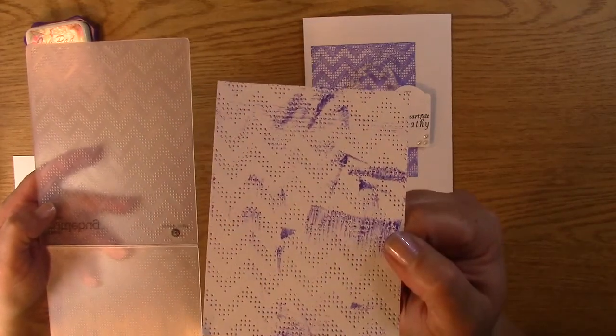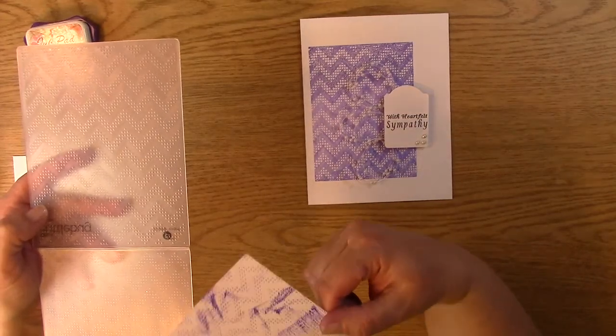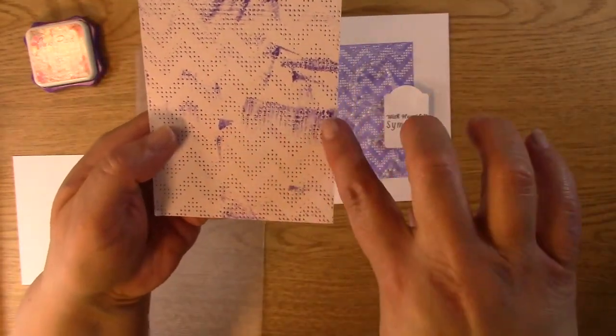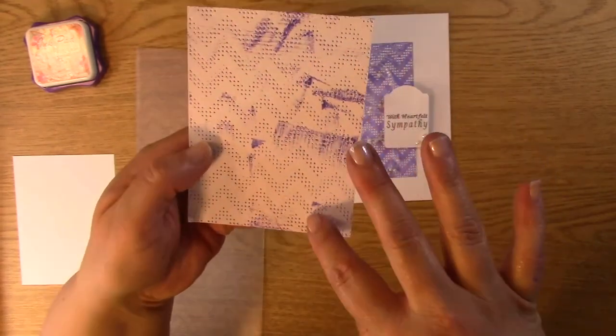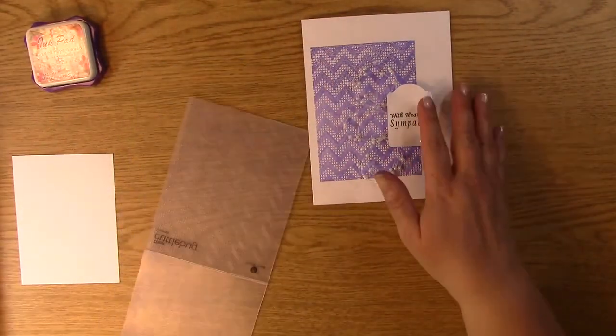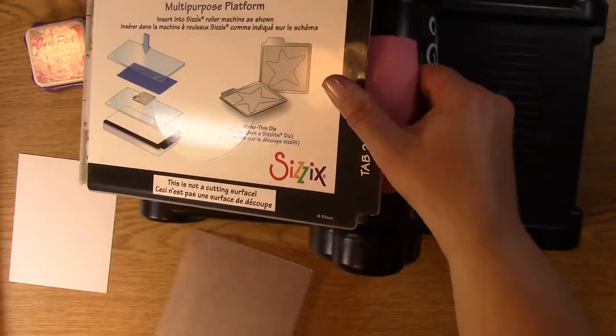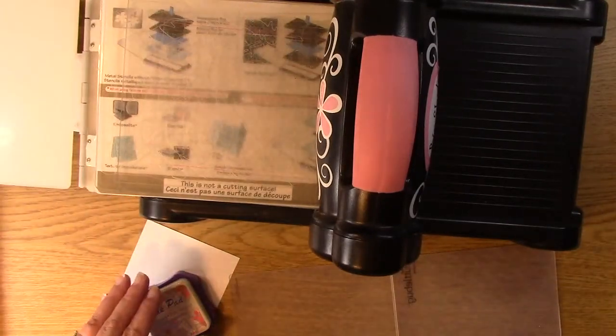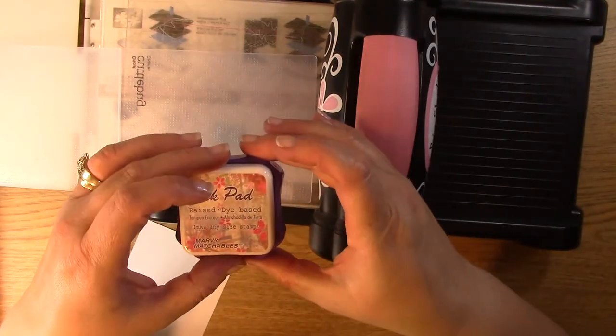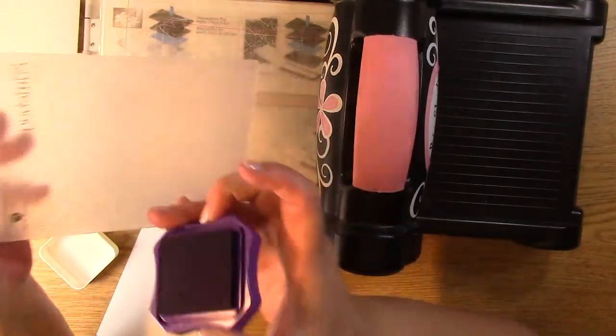What we're going to do is ink the smooth side. This is the textured side. This is the smooth side. That's the side I'm going to be inking. We're going to open up our ink pad and ink the entire thing just like so. You could use paint. I would definitely thin it out so it doesn't get too goopy. You can use watercolors. There's a lot of things you can do with embossing folders. I happen to use ink because this purple is perfect for what I was looking for.